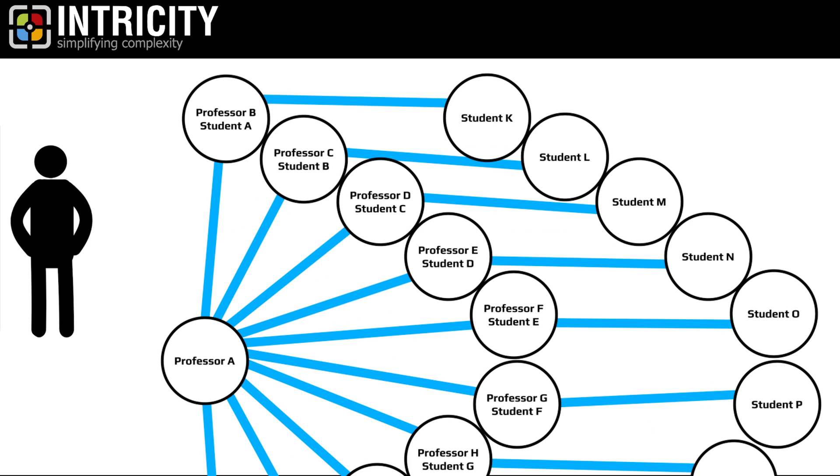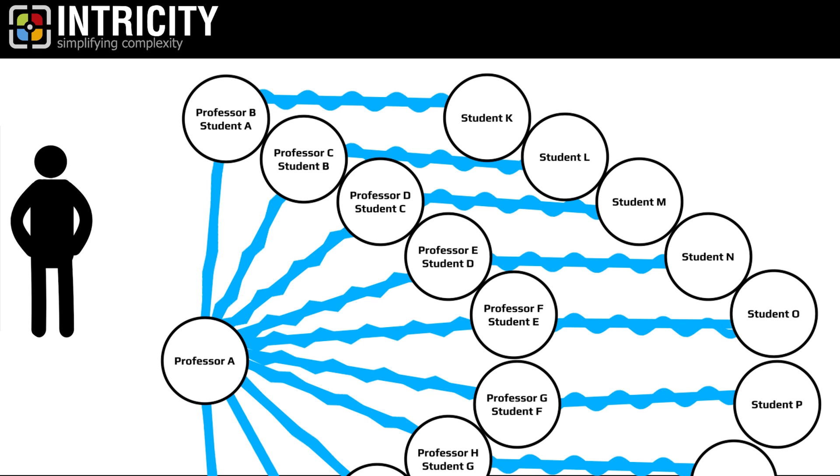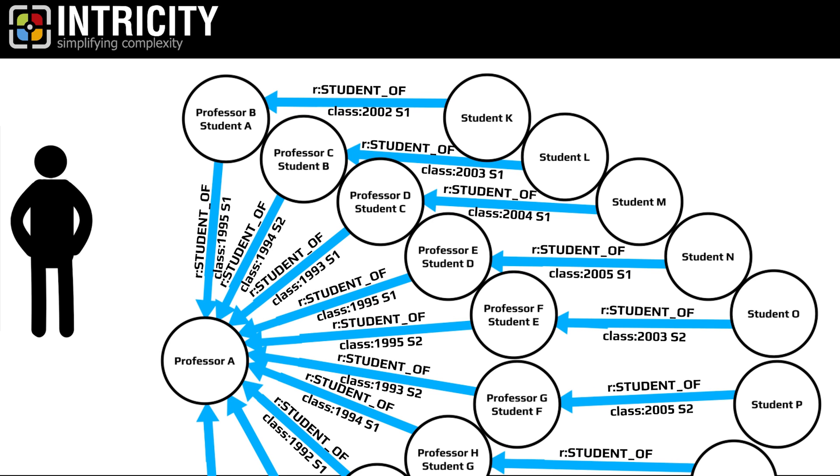So now let's zoom in and describe some of the traits of a graph database. First, you have nodes, which are essentially records. Connected to these nodes is a type of relationship which can have a direction and a property associated to it. So in our case, the direction points from the original professor, the relationship type is student_of, and the property is the year and semester where they were taught.